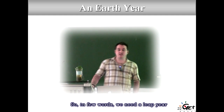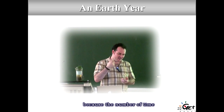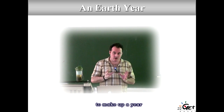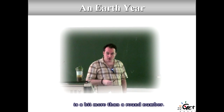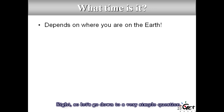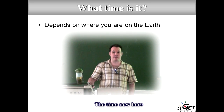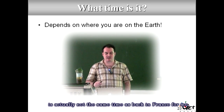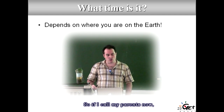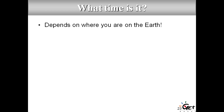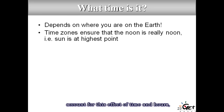In a few words: we need a leap year because the number of rotations required to make up a year is a bit more than a round number. Now, what time is it? The answer depends on where you are on Earth — the time here is not the same as in France. To account for this we came up with the idea of time zones.